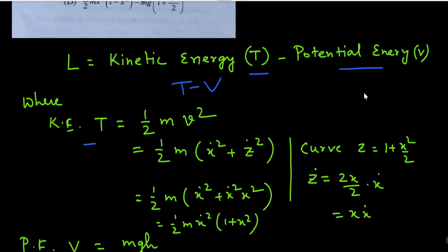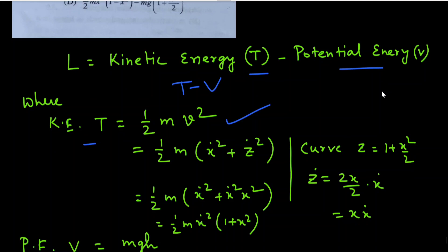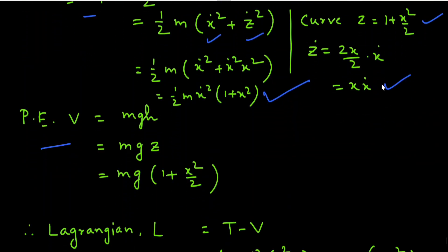Kinetic energy T = ½mv². Since the motion occurs in the xz-plane, we take only x-dot squared and z-dot squared: T = ½m(ẋ² + ż²). Given z = 1 + x²/2, the time derivative gives ż = x·ẋ. Substituting, T = ½m·ẋ²(1 + x²).